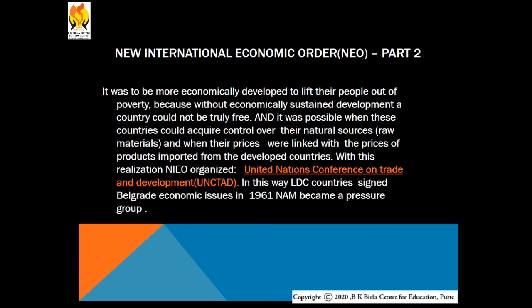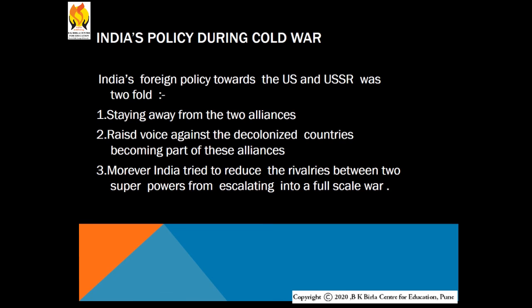NIEO was about becoming more economically developed to lift people out of poverty, because without economically sustained development a country could not be truly free. This was possible when these countries could acquire control over their natural resources and when the prices of raw materials were linked with the prices of products imported from developed countries. With this realization, NAM organized the United Nations Conference on Trade and Development — UNCTAD — and LDC countries raised these economic issues in 1961, then became a pressure group.